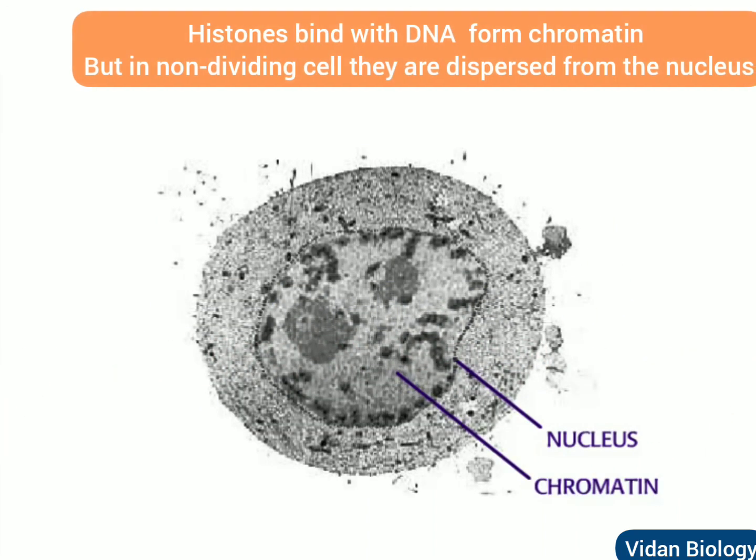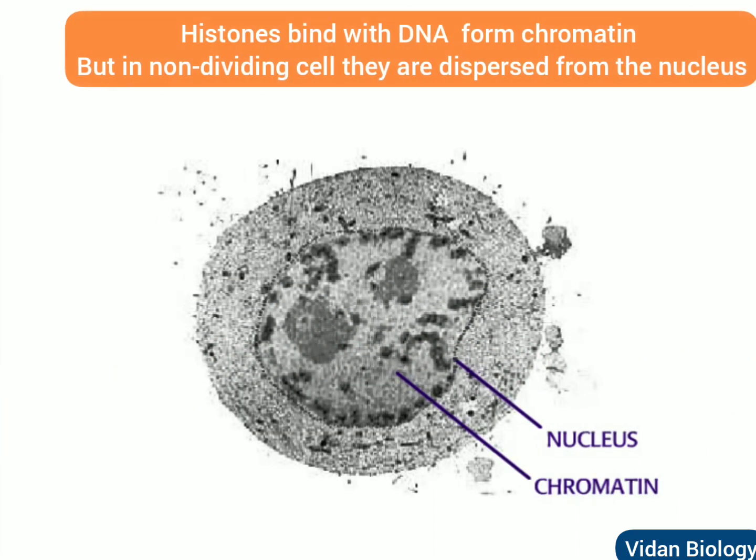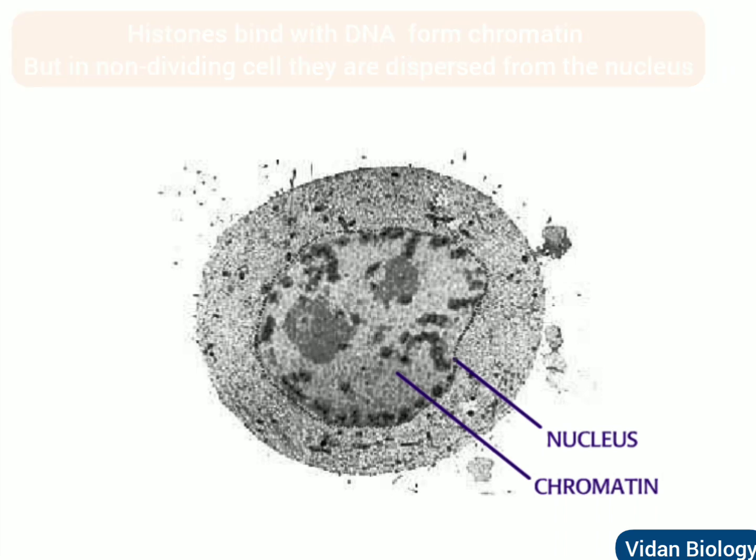Histones bind to DNA to form chromatin. In the nucleus of higher cells, in non-dividing cells, the chromatin is dispersed throughout the nucleus.